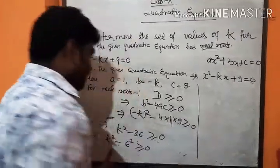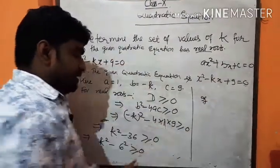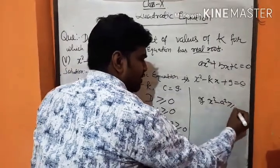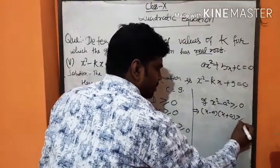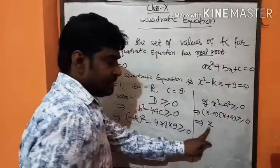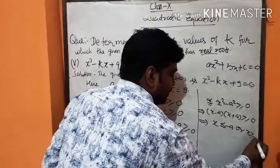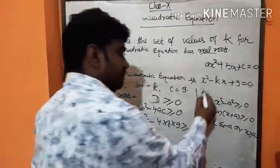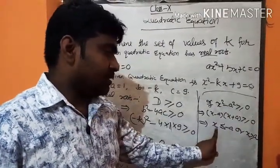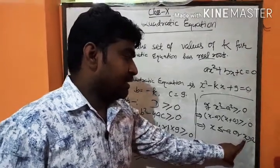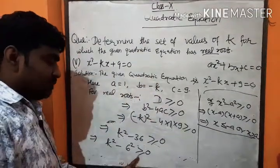Further, k squared minus 36 is written as k squared minus 6 squared, greater than or equal to 0. This is the form of a squared minus b squared. We know the property: if x squared minus a squared is greater than or equal to 0, it may be written as x minus a into x plus a greater than or equal to 0, which implies x is less than or equal to minus a, or x is greater than or equal to a.